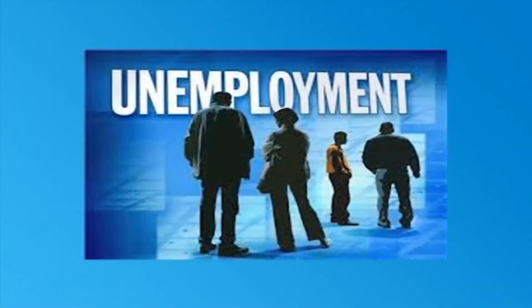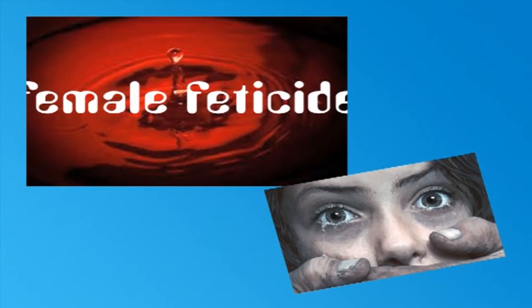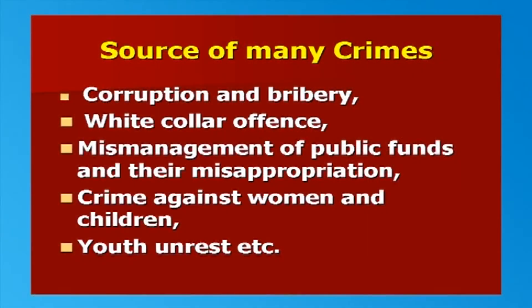For example, more than 60 percent of crimes are said to occur due to poverty and unemployment. Poverty and unemployment are considered to be responsible for even female foeticide and infanticide. Not only the economic factors of poverty and unemployment, but also the pace of development becomes the source of many crimes like corruption and bribery, white-collar offences, mismanagement of public funds and their misappropriation, crime against women and children, youth unrest, etc.